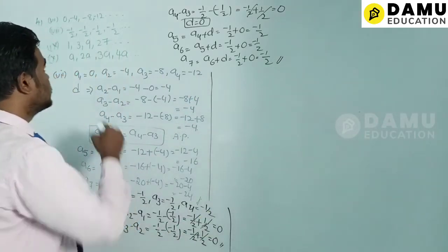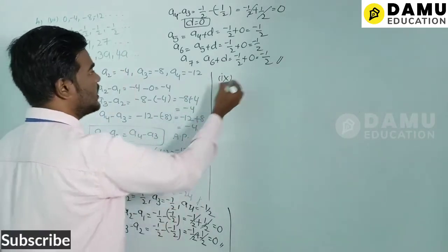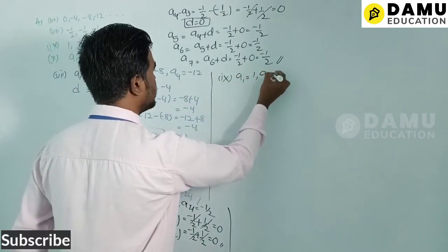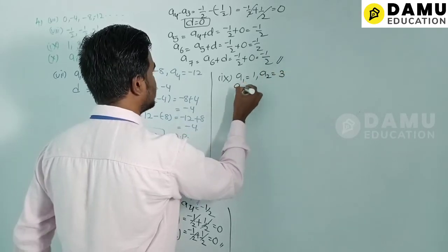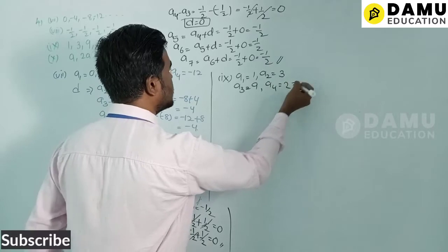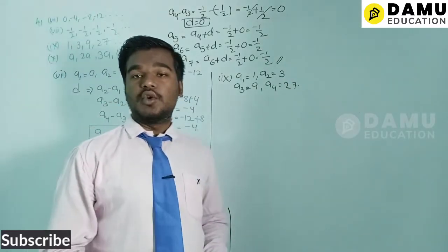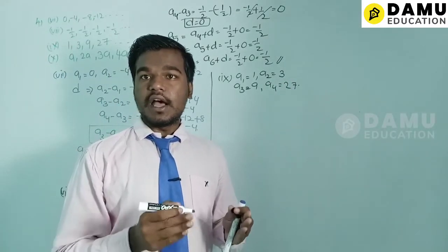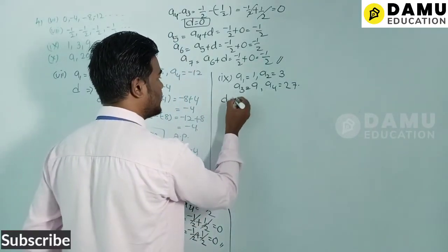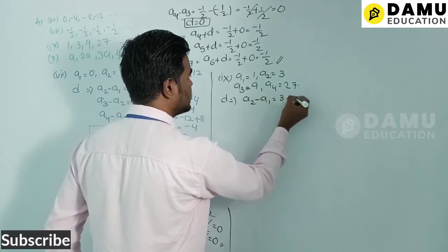For the ninth series: a1 = 1, a2 = 3, a3 = 9, a4 = 27. The common difference d = a2 − a1 = 3 − 1 = 2.